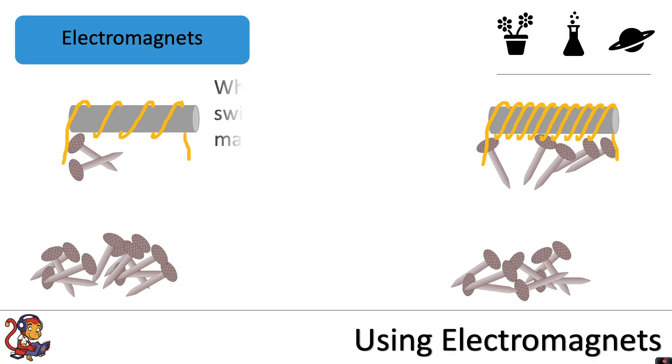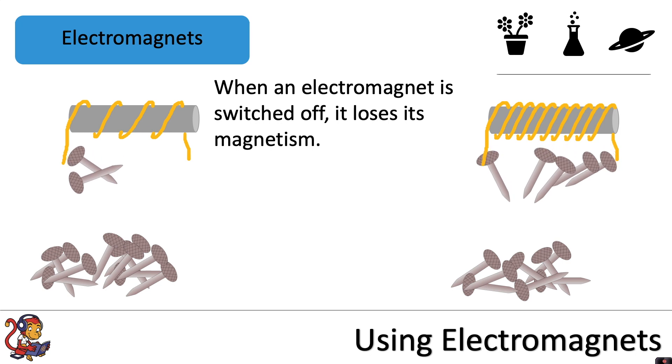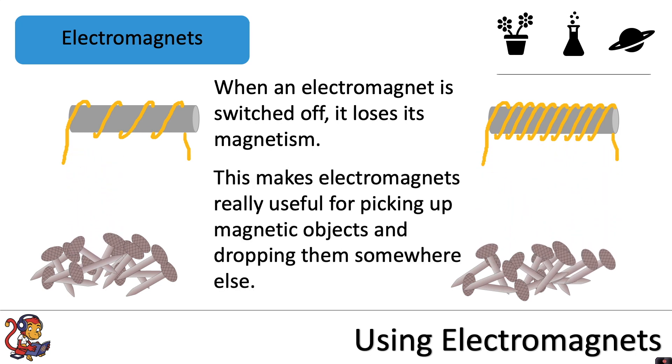When we looked at electromagnets, we said that when an electromagnet is switched off it loses its magnetism. This makes electromagnets really useful for picking up magnetic objects and dropping them somewhere else. In this video we're going to look at some of the uses of electromagnets.